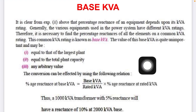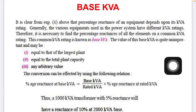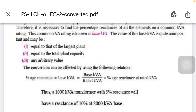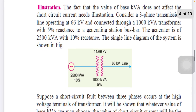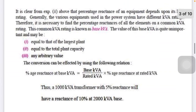You can see the base KVA, rated KVA, and percentage reactance in that equation. For example, if we have a 100 KVA transformer with a reactance rating of 5 percent, and we want to find its reactance at a 2000 KVA base, we can calculate it using the percentage base KVA equation. The result is always in percentage form, so no multiplication or division by 100 is needed.